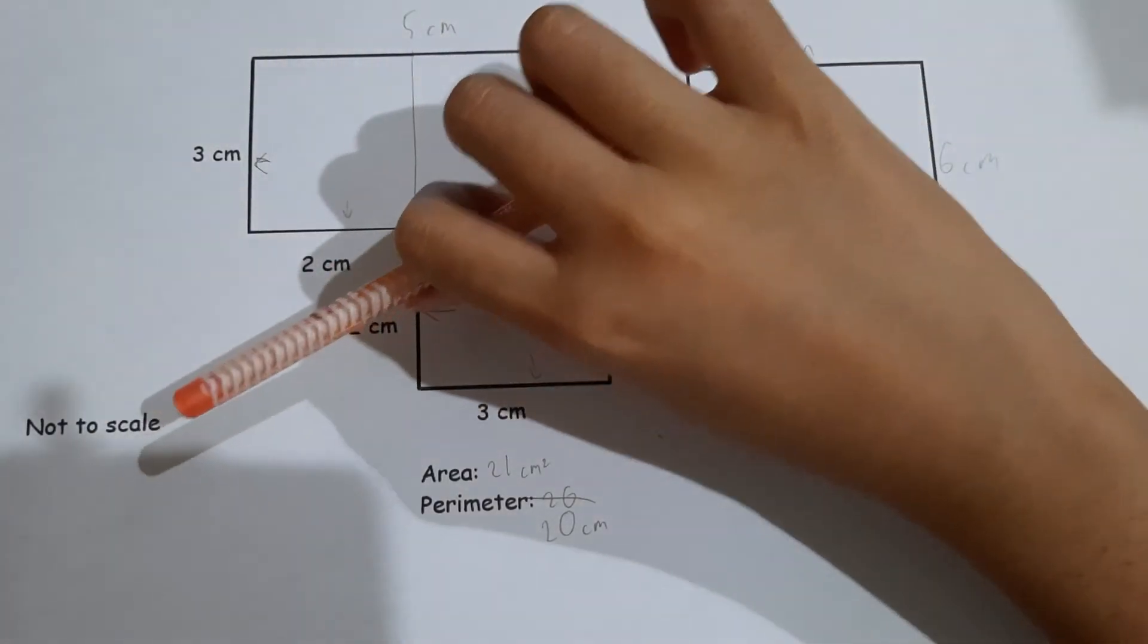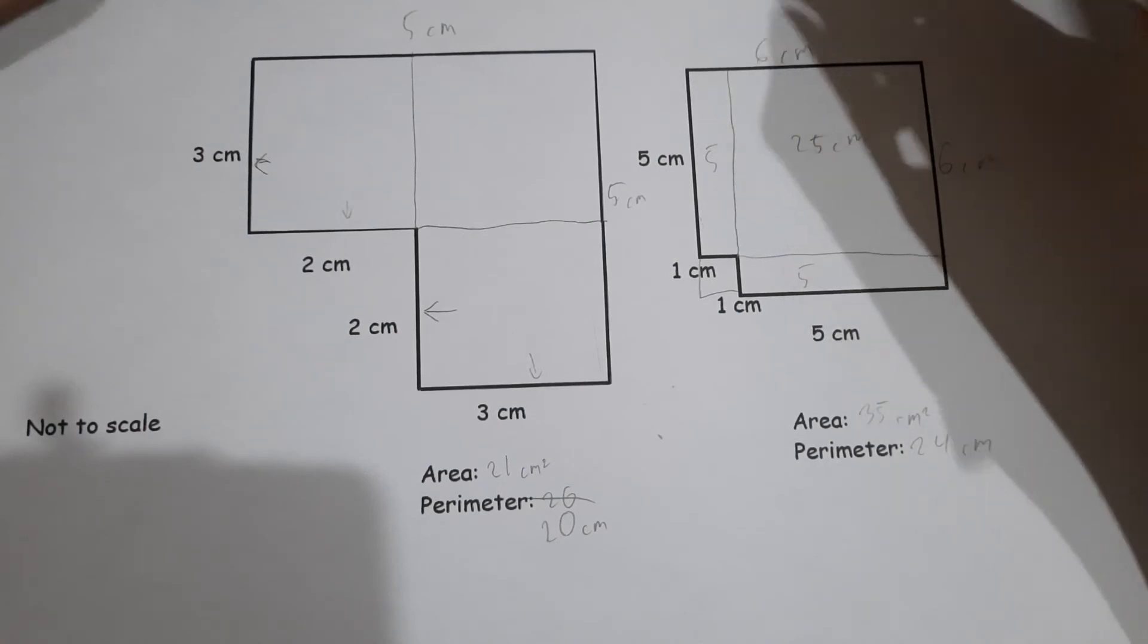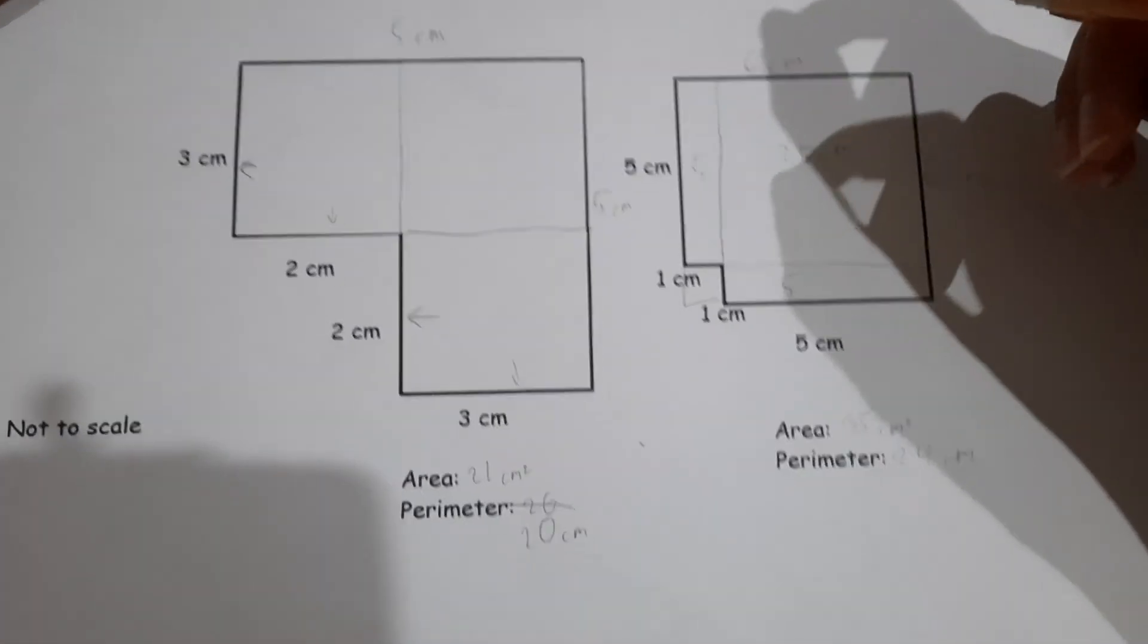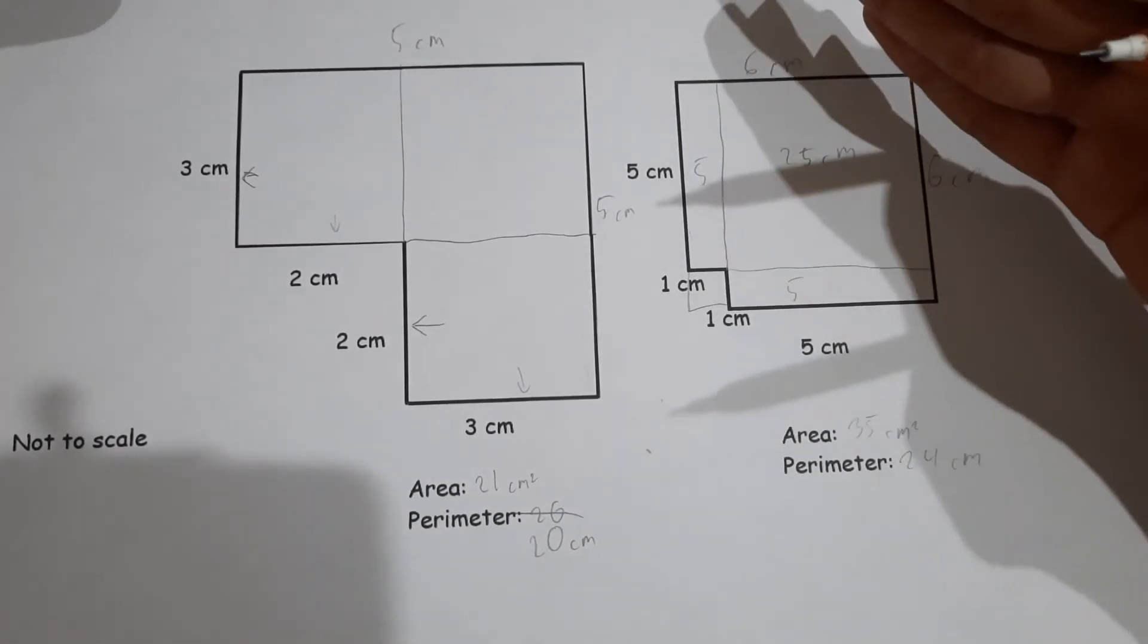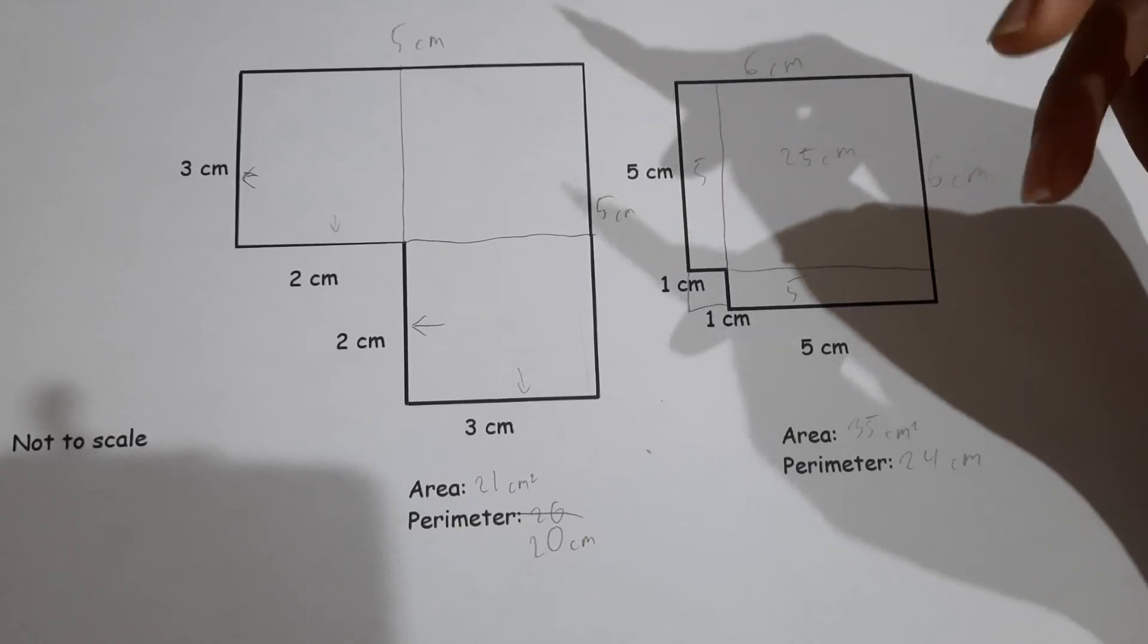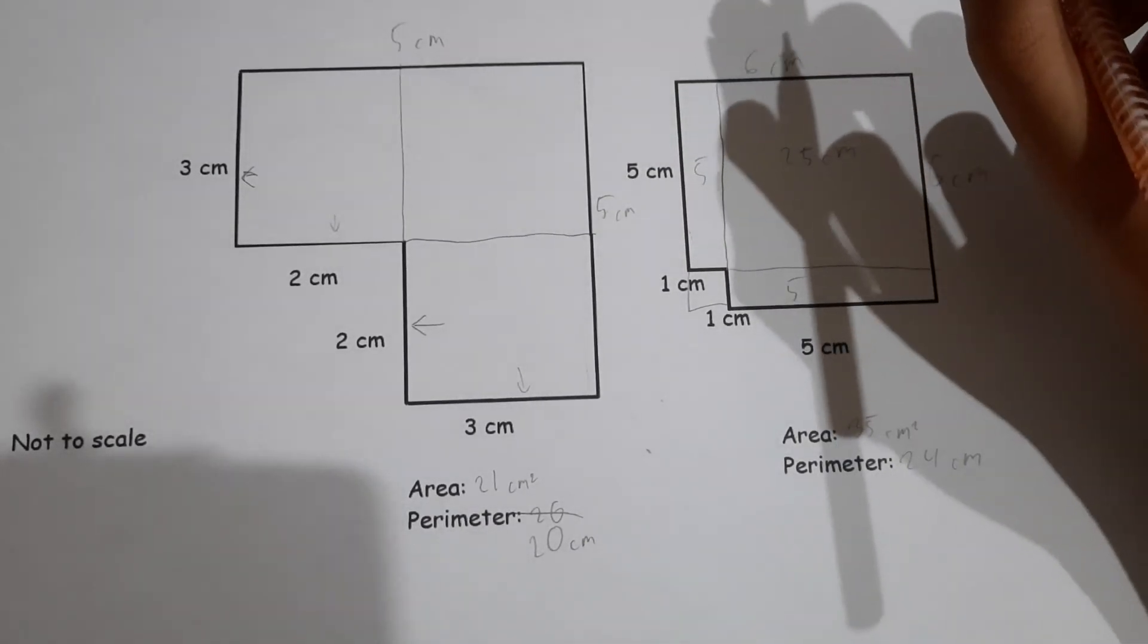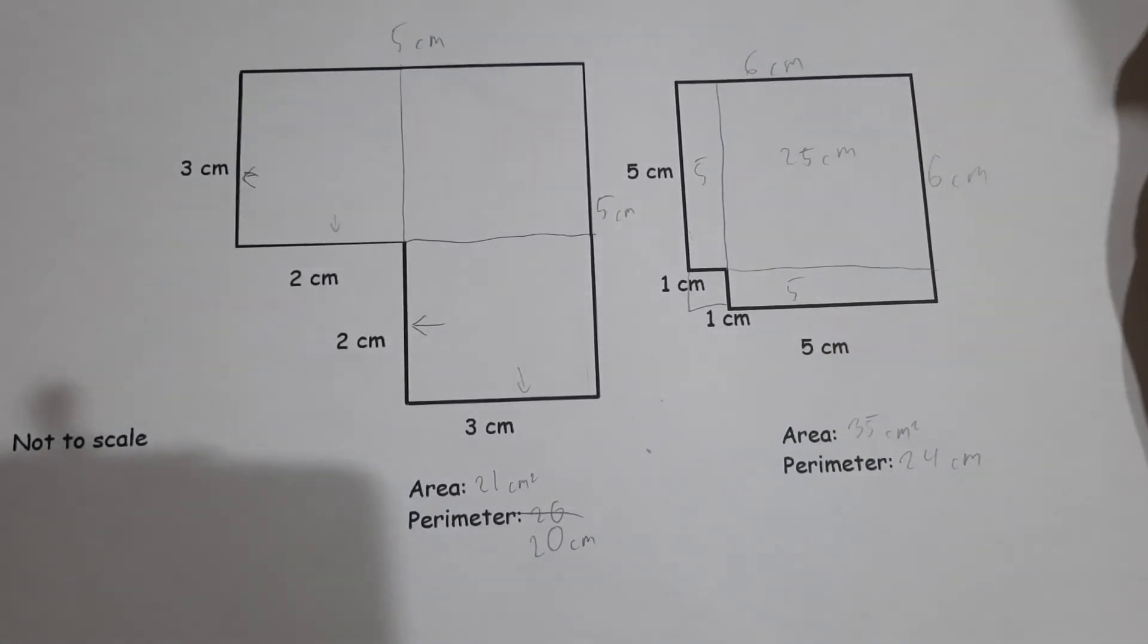Just a reminder, this is not to scale. Okay, I think you should understand how we can calculate the area and perimeter of composite figures. Okay, so we are done. Thank you for watching and goodbye.